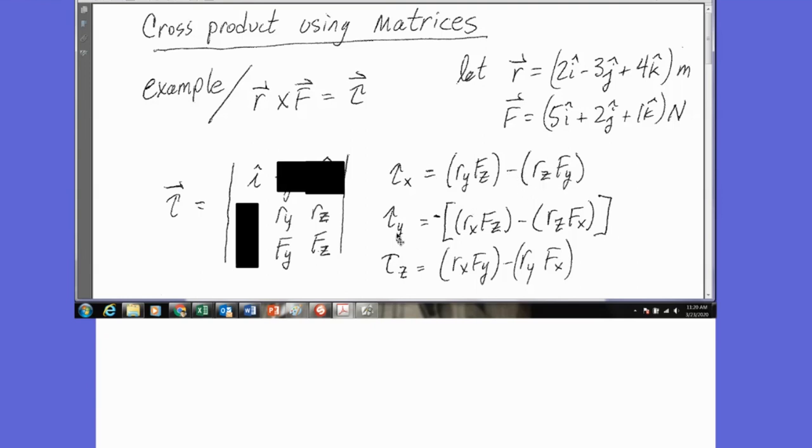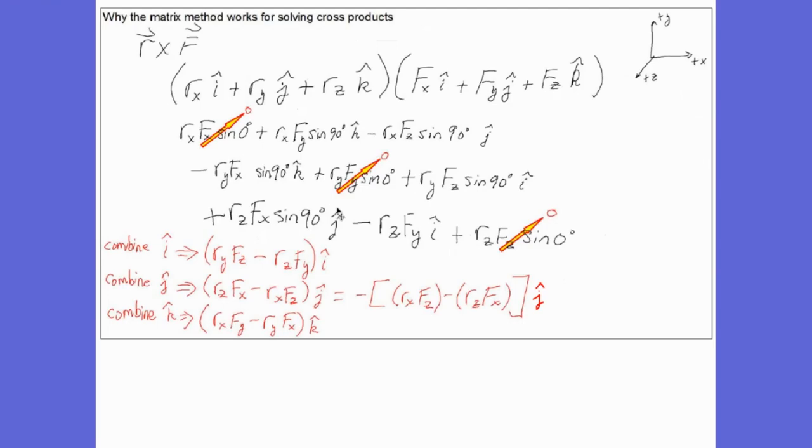Then for the Y, I'm going to cover up the row and the column of the J. And now I do my X again, RX times FZ minus RZ times FX. And that's what you see there. But this negative sign, this is there. So we agree with what we had before over here, right? This is why we did this. So we can stick with our X cross method.